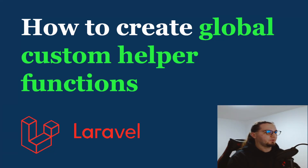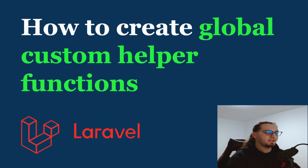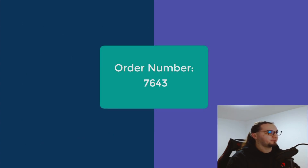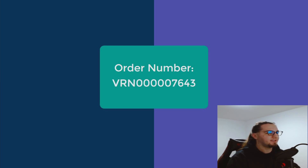Hey everyone, in this video we are going to be looking at how to create custom helper functions using Laravel 8. These are global functions, meaning they can be called on both the back-end such as controllers and services, and front-end blade templates, and other areas as well. In just a few steps we'll implement a custom helper function whose purpose is to format an order number from one format to another. So let's get started.